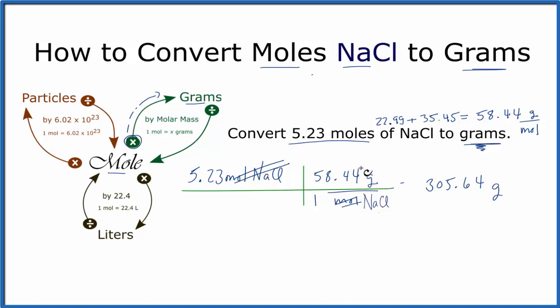You can kind of think of it that we have the desired quantity, we want to find grams, over the given. We're given moles. That's how you set your conversion factor up and then you make sure the moles cancel out and leave you with what you're looking for.